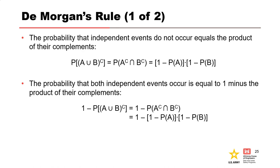To calculate the union or intersection between multiple events, we can use DeMorgan's rule. The probability of independent events not occurring is equal to the product of their complements: the probability of neither event A nor event B occurring equals (1 minus P(A)) times (1 minus P(B)). Taking 1 minus that product gives the probability of either event A or B occurring — the union. So the probability that one or both independent events occur equals 1 minus the product of their complements.